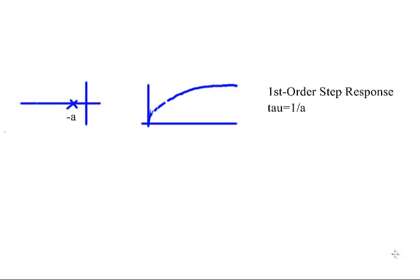The first-order system only has one pole on the real axis. Its location is negative a, and therefore its step response shows a time constant of 1/a because a shows up in the analytical expression as a*t. That's what gives it a time constant of 1/a.